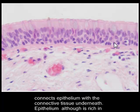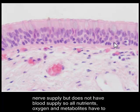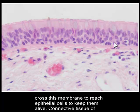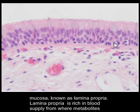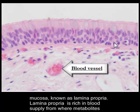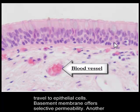The basement membrane not only provides structural support but also connects epithelium with the connective tissue underneath. Epithelium is rich in nerve supply but does not have blood supply at all, so all nutrients, oxygen, and metabolites have to cross this membrane to reach epithelial cells. The connective tissue of the mucosa, known as lamina propria, is rich in blood supply, from where all metabolites travel to epithelial cells. The basement membrane offers selective permeability.